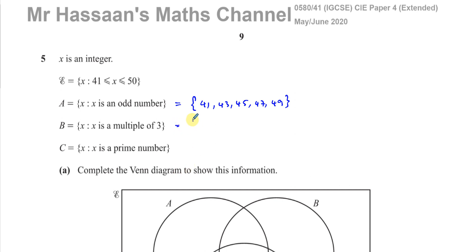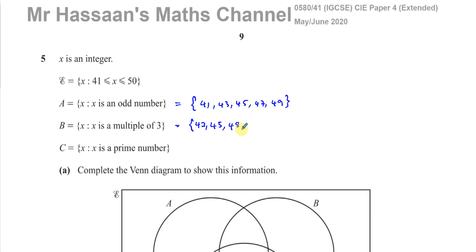Then we have Set B: multiples of 3. Any number whose digit sum is divisible by 3 is divisible by 3. So: 42 — digits sum to 6, yes. 43, no. 44, no. 45 — digits sum to 9, yes. 46, no. 47, no. 48 — digits sum to 12, yes. 49, no. 50, no. So multiples of 3 in range: {42, 45, 48}.